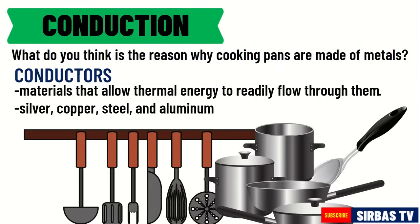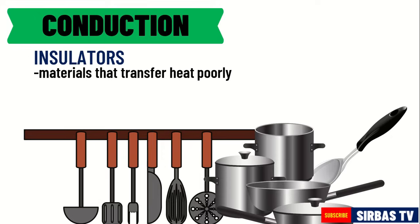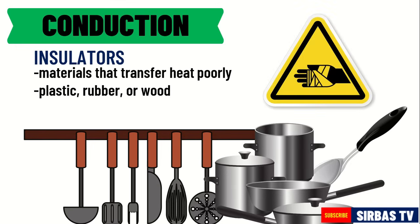On the other hand, materials that transfer heat poorly are called insulators. This is the reason why most cooking utensils have handles made of plastics, rubber, or wood — to prevent heat from flowing to the handles, which prevents us from being burned.